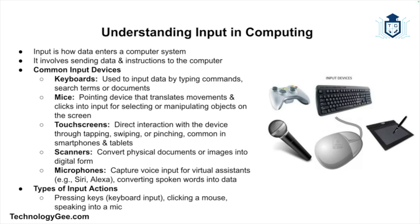Then we have mice. A mouse allows you to move a pointer and select or manipulate objects on the screen — every click and movement translates into input. Then we have touchscreens. Think about how smartphones and tablets work: the touchscreen allows for direct interaction by tapping, swiping, or pinching, all of which are forms of input. Then we have scanners, which convert physical documents or images into digital form and are also input devices.